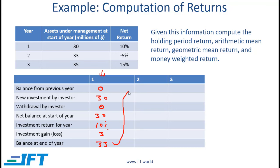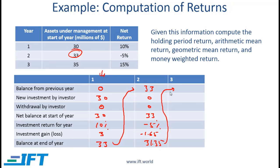The balance at the start of year 2 is $33. With a -5% investment return, the loss is $1.65, leaving $31.35 at year end. Since we are told the starting balance for year 3 is $35, a new investment of $3.65 must have been made. There is no withdrawal, so the net investment is $3.65.